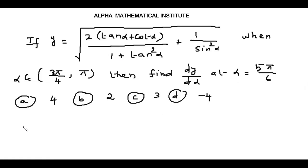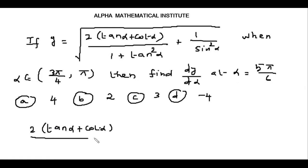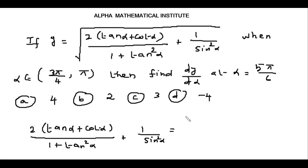Let's simplify the quantity inside the square root. We have 2 times (tan α + cot α) divided by (1 + tan²α), plus 1 divided by sin²α. Let's change the expression into sin and cos. We write tan α as sin α divided by cos α.